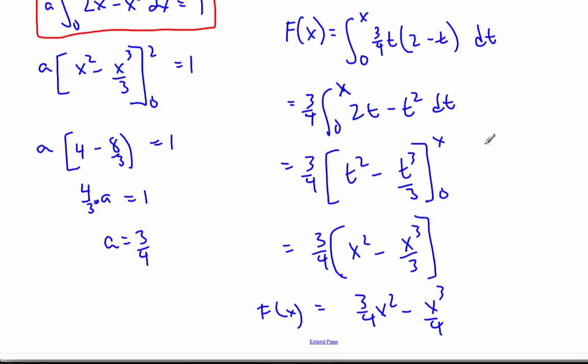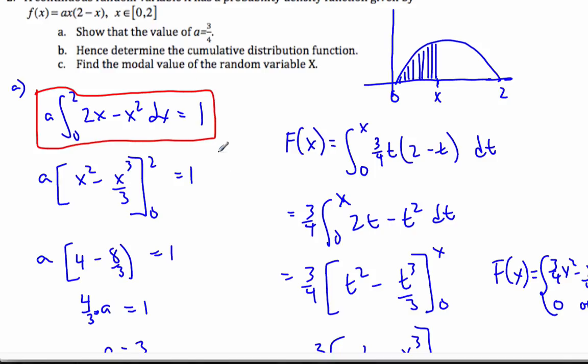And so to properly define it, I would say F of X is equal to 3 quarters, X squared minus X cubed over 4. For 0 less than or equal to X, less than or equal to 2. And 0 otherwise. All right, so now we've found the cumulative distribution function by taking the integral of my little f of X from 0 to X.